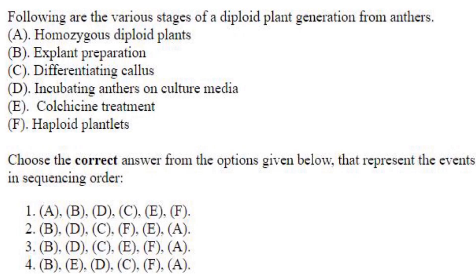Then comes differentiating callus, followed by haploid plantlets obtained from the callus. These plantlets are then treated with colchicine for chromosome doubling, and you get homozygous diploid plants. The answer is option 2: B, D, C, F, E, A.